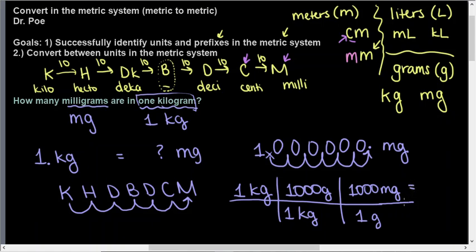And if we multiply this all out together, we end up with the exact same answer. It's going to be a 1 with 1, 2, 3, 4, 5, 6 zeros after it. So I'm just going to abbreviate that in scientific notation. 1 times 10 to the 6th milligrams, which is the same as we got with the other method.